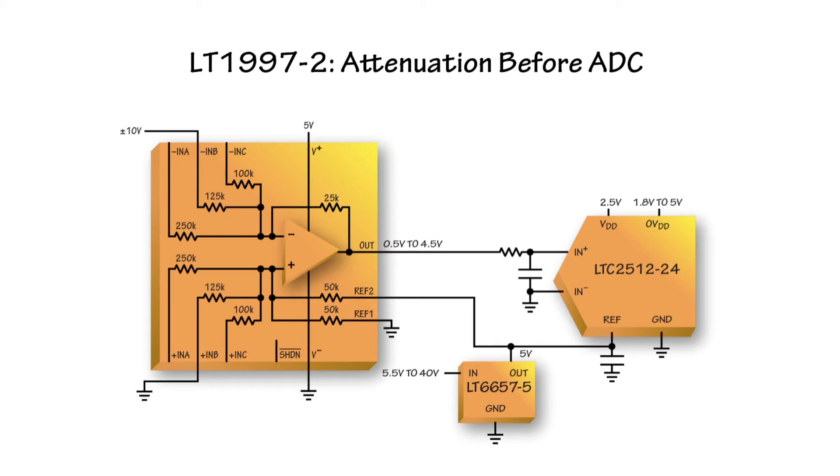In the circuit shown, we take advantage of that by powering the LT1997 from a single 5 volt supply, which then also protects the ADC from ever being driven into overrange.